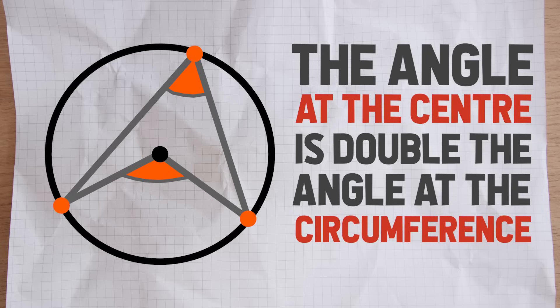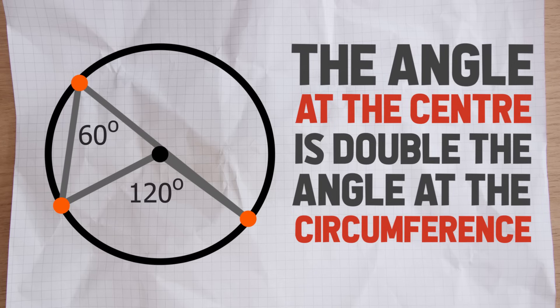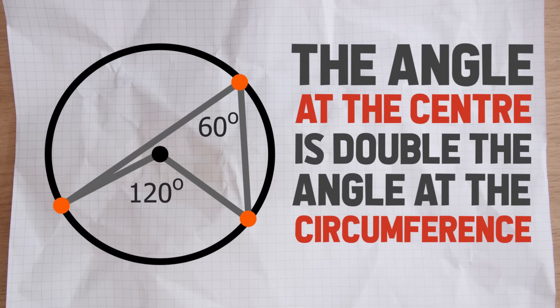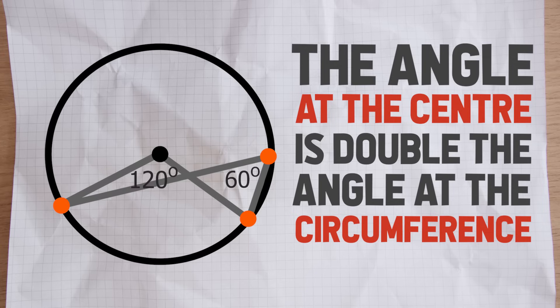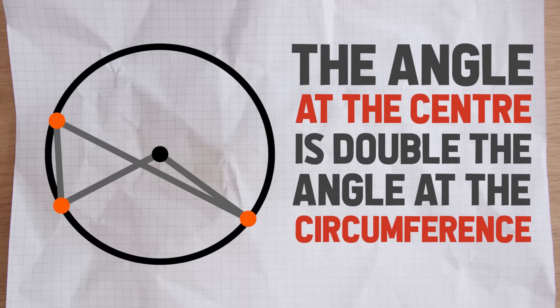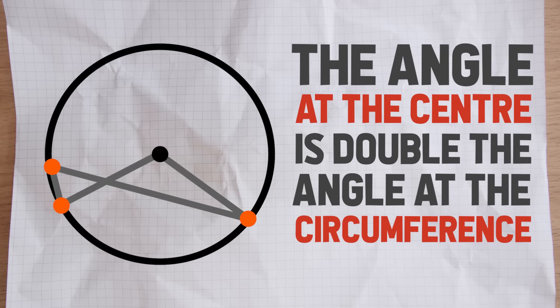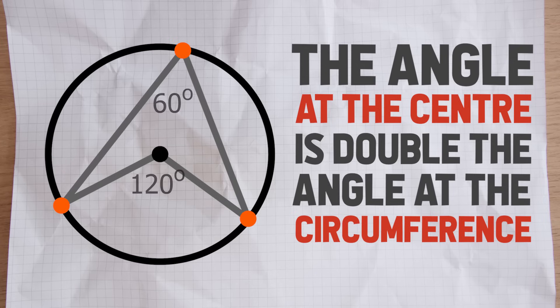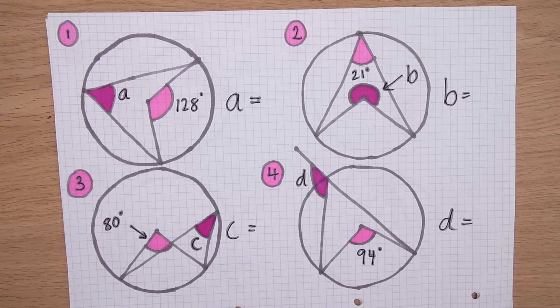Even if we move this point around it will always be the case. Just be aware that it may look very different sometimes - like this arrow-shaped example - or at other times it could look completely different. But in both cases the angle at the centre is always double the angle at the circumference. Here are three questions - pause the video, find the missing angles and I'll show you the answers in a moment.